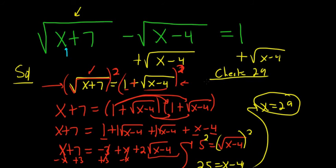So you get, let's see, 29 plus 7, that's 36, minus, and then 29 minus 4, that's 25. And that should be equal to 1. So the square root of 36 is 6, the square root of 25 is 5. Yep, 6 minus 5 is 1, so that indeed does check. Hope that made sense.